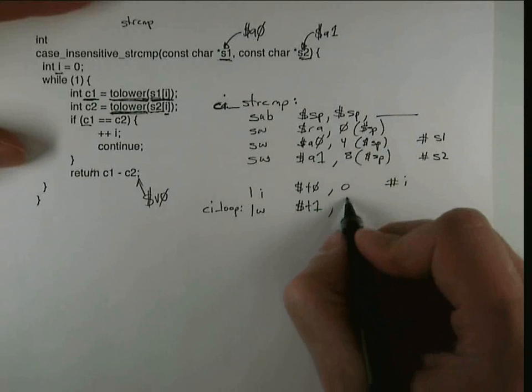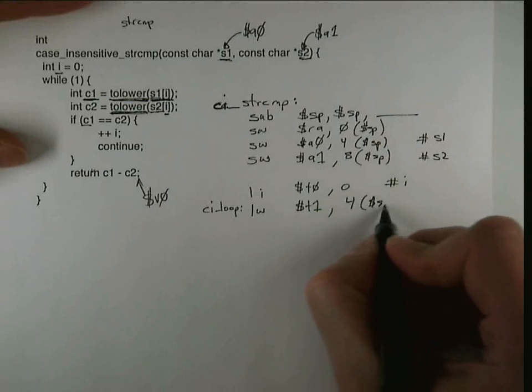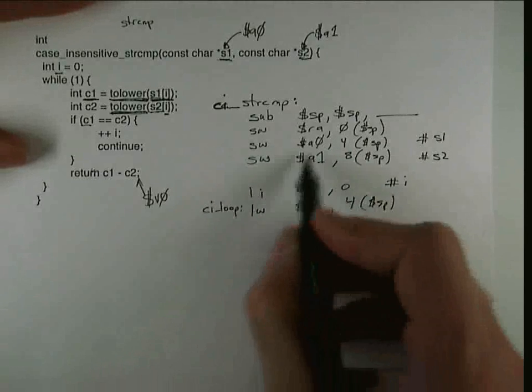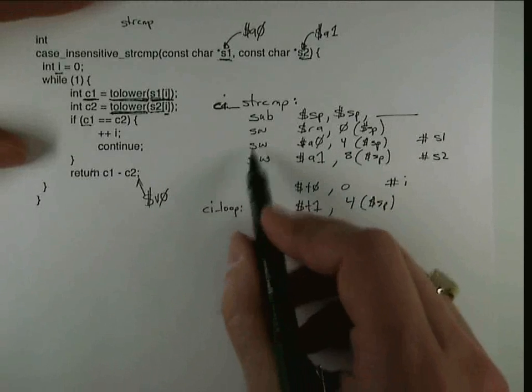So to get S1, I need to load that back. And basically I'm doing the exact opposite operation. You see this code is exactly the same here. Well, I'm using a different register here, but instead of a store word, I'm using a load word.